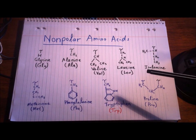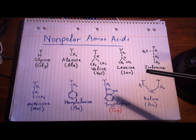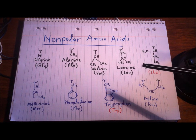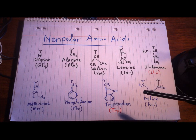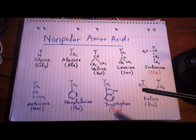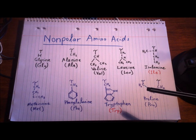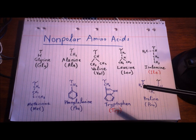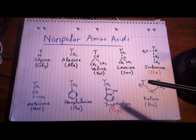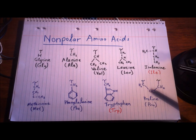Tryptophan seems pretty complicated, but it's the only amino acid with two rings — one ring, two rings. You'll also notice the shorthand is different from the first three letters, which is why I highlighted it. Short for tryptophan is TRP instead of TRY — TRP, tryptophan.